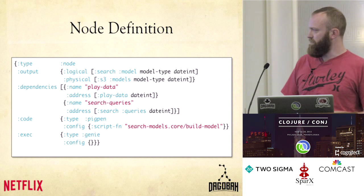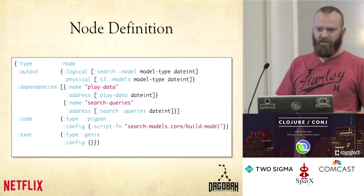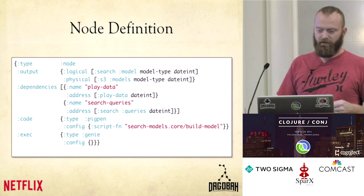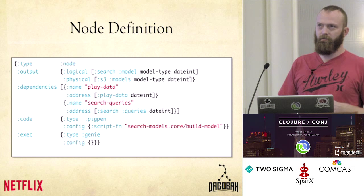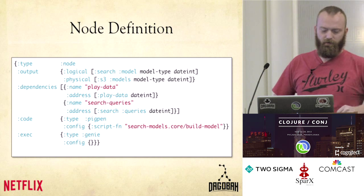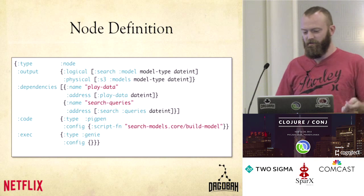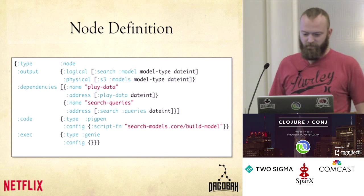This is the code to run — in this case we're going to run a Pigpen script. The script function is the entry point into our code. Exec says where to run it. Genie is a service we have at Netflix that executes Hadoop jobs of any sort — you can basically just say Genie, go run this for me, and it'll tell you when it's done.